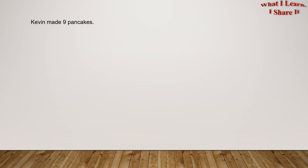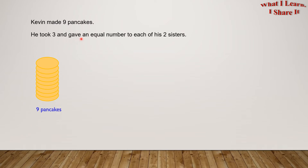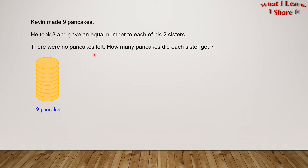So Kevin made 9 pancakes — here are Kevin's 9 pancakes. He took 3 and gave an equal number to each of his two sisters. There were no pancakes left. How many pancakes did each sister get? We will solve this problem in 2 steps. In step 1, we will give Kevin his 3 pancakes and see how many are left. And in step 2, we will divide the remaining pancakes equally into 2 parts.